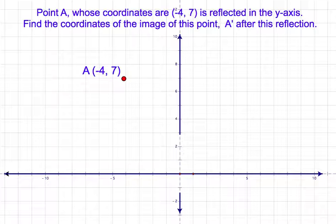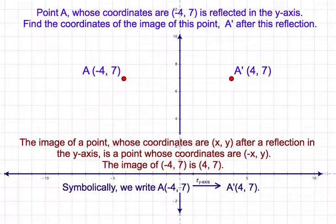We will now review some related problems. Problem number 1: Point A whose coordinates are (-4, 7) is reflected in the y-axis. Find the coordinates of the image of this point, A', after this reflection. Solution: The image of a point whose coordinates are (x, y) after reflection in the y-axis is a point whose coordinates are (-x, y). The image of (-4, 7) is (4, 7). Symbolically, point A(-4, 7) after reflection in the y-axis is point A'(4, 7).